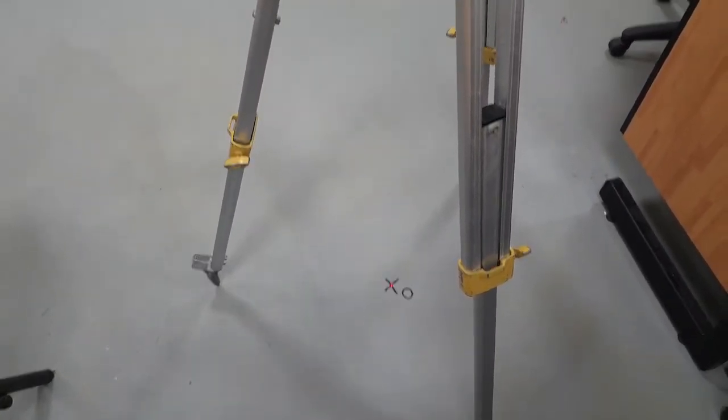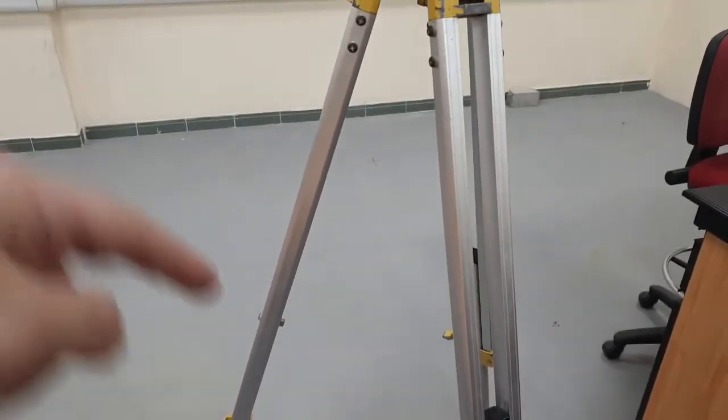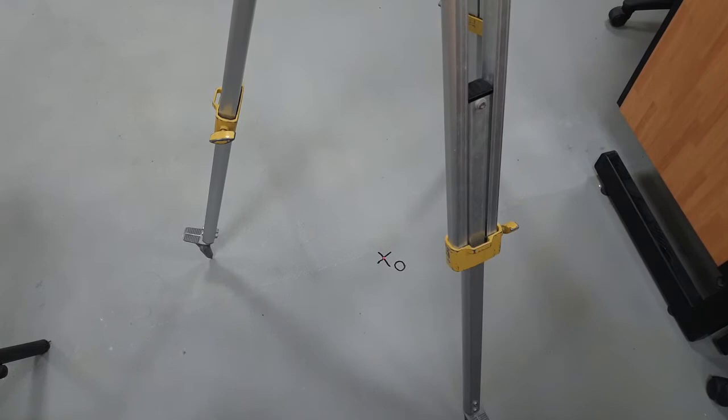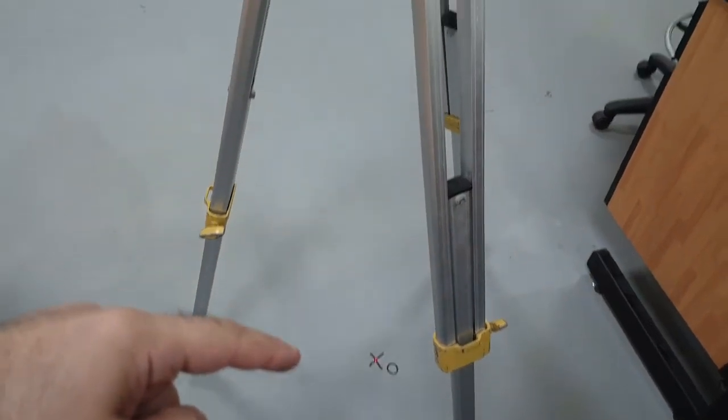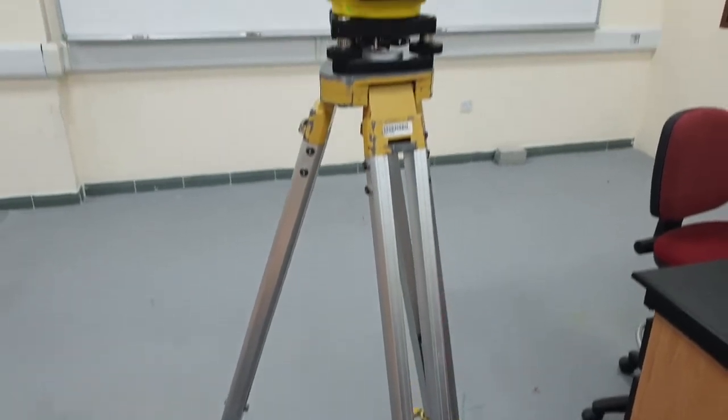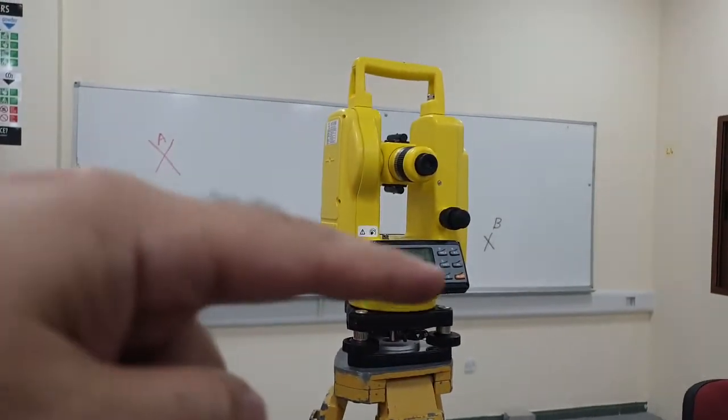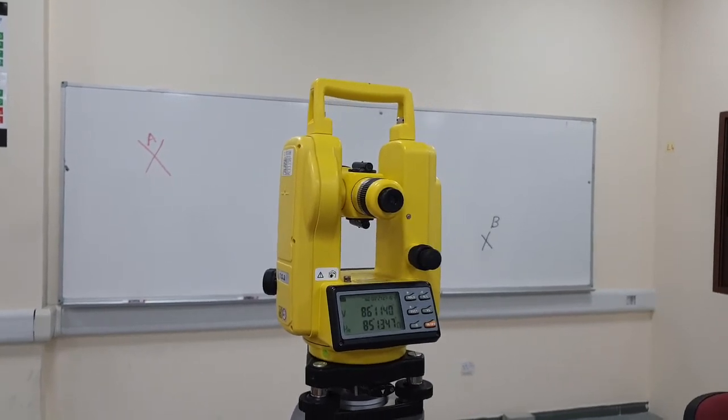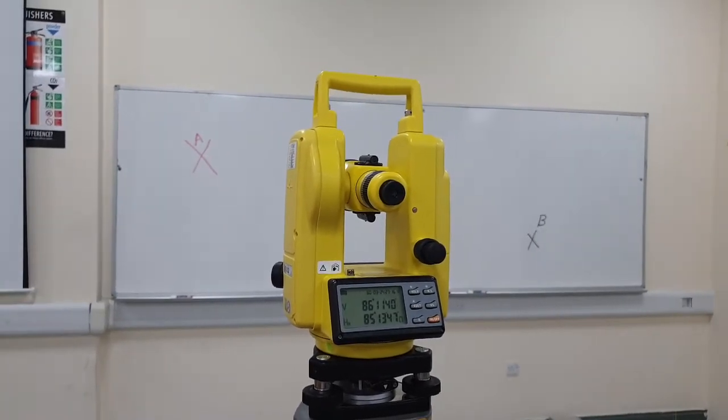So I need to measure the angle between A and B—the angle AOB—the angle between line AO and line OB on the board, and the vertical angle also between A and B.